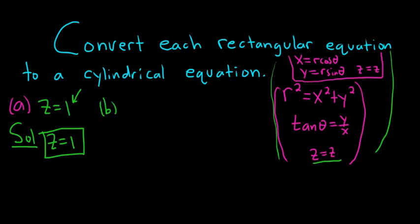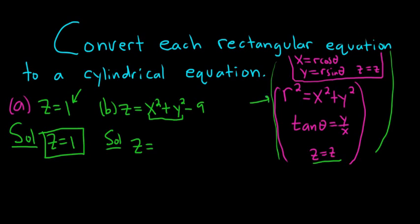Part b. Say we have z equals x squared plus y squared minus 9. Let's try to convert this one. Z stays the same. And x squared plus y squared is r squared — that's this equation here. So this becomes z equals r squared minus 9. That would be the cylindrical equation.